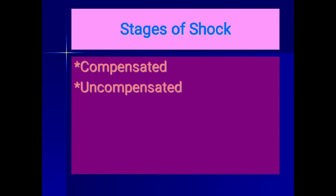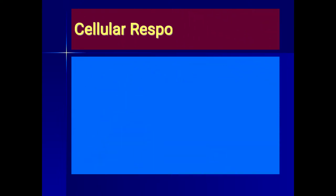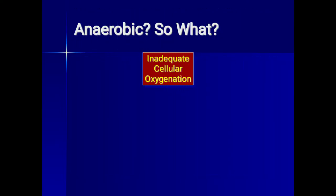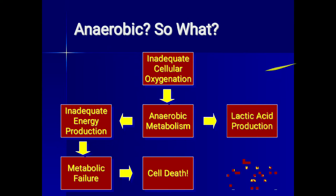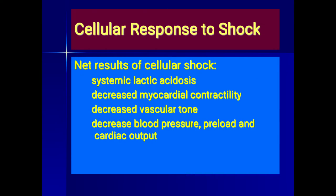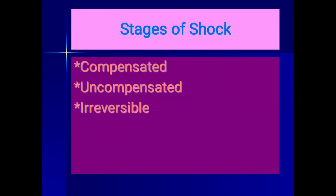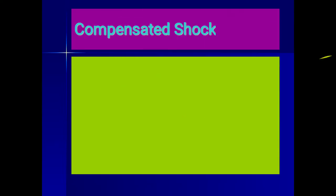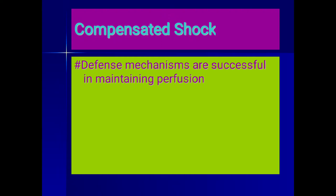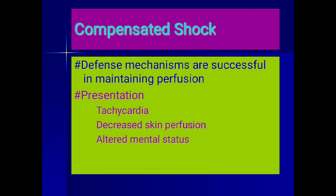The stages of shock are: compensated shock — when renal, hormonal, and neuroendocrine mechanisms successfully maintain blood pressure at an acceptable level; uncompensated shock — when the body's defense mechanisms begin to fail. In compensated shock, the presentation includes tachycardia, decreased skin perfusion, and altered mental status.